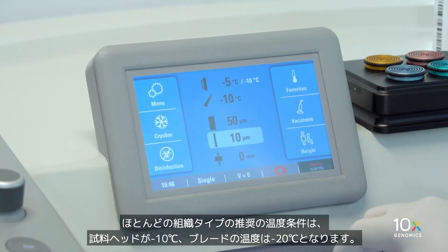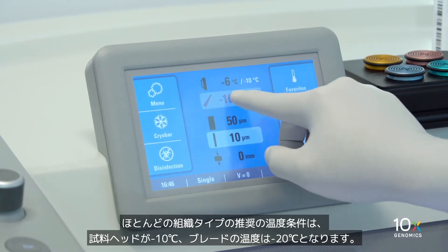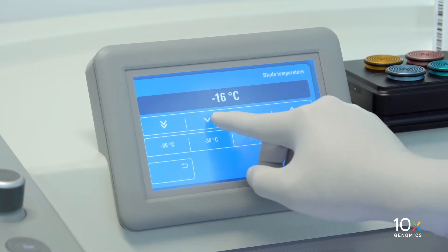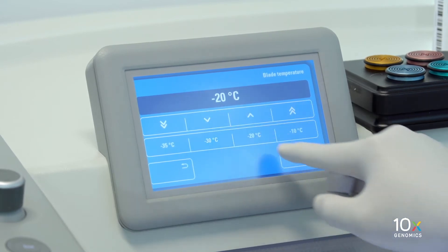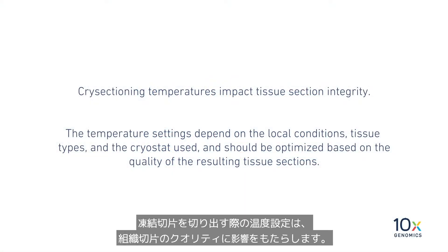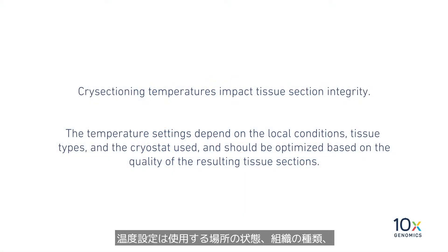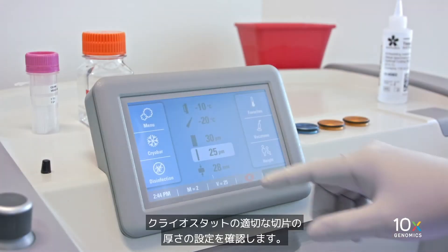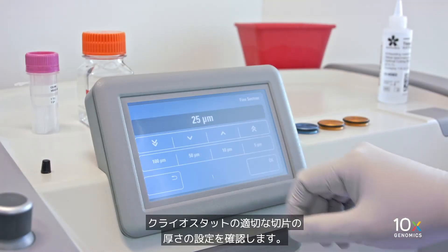The recommended sectioning temperatures for most tissue types is minus 10 degrees Celsius for the specimen head and minus 20 degrees Celsius for the blade temperature. Cryo sectioning temperatures impact tissue section integrity. The temperature settings depend on local conditions, tissue types, and the cryostat used, and should be optimized based on the quality of resulting tissue sections.